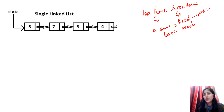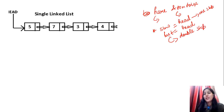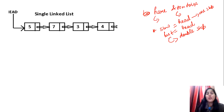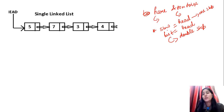The slow pointer will take one step at a time, and the fast pointer will move at double speed — two steps at a time. When the fast pointer reaches the end of the linked list — meaning fast.next is null, or fast itself becomes null — the node on which our slow pointer is pointing will be our middle node.